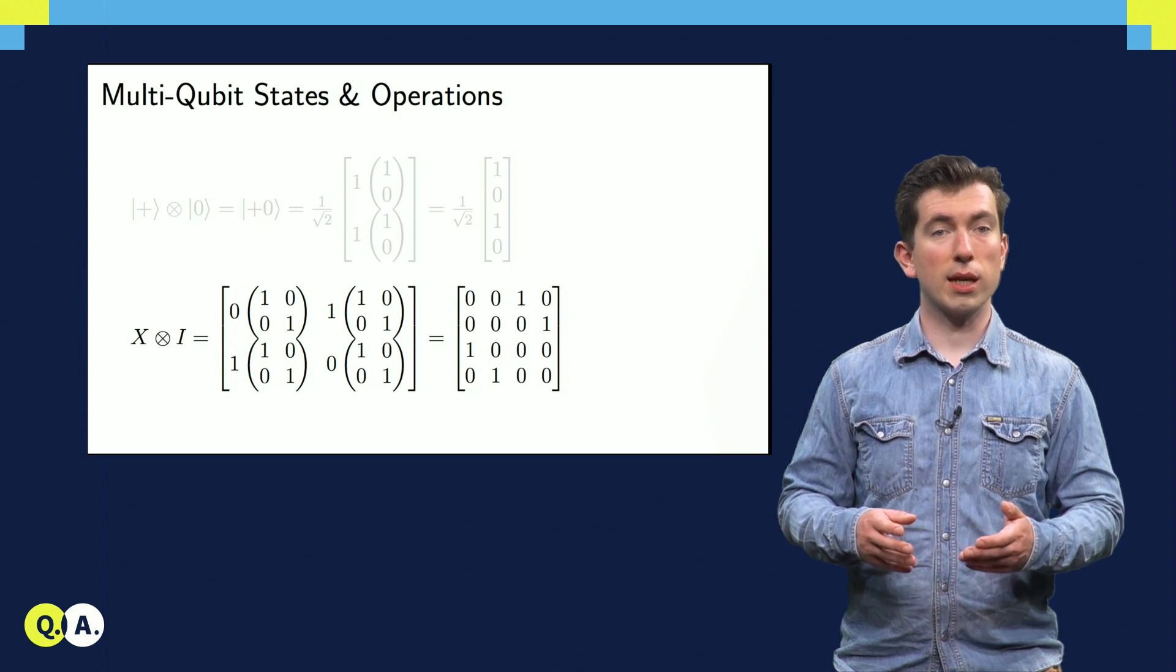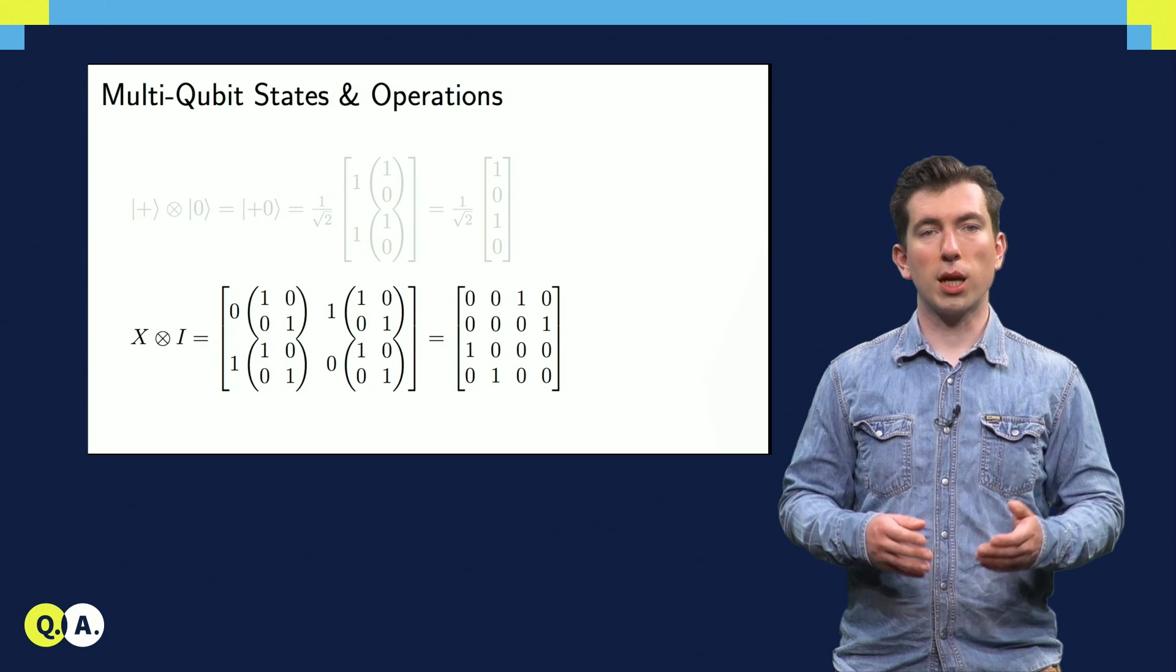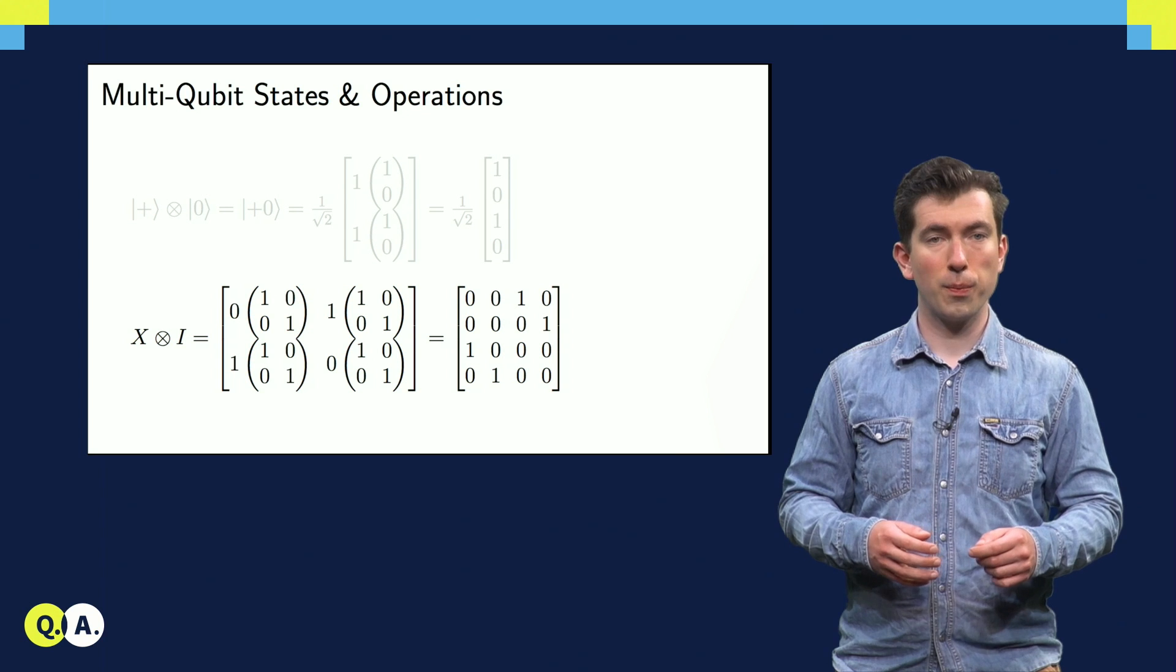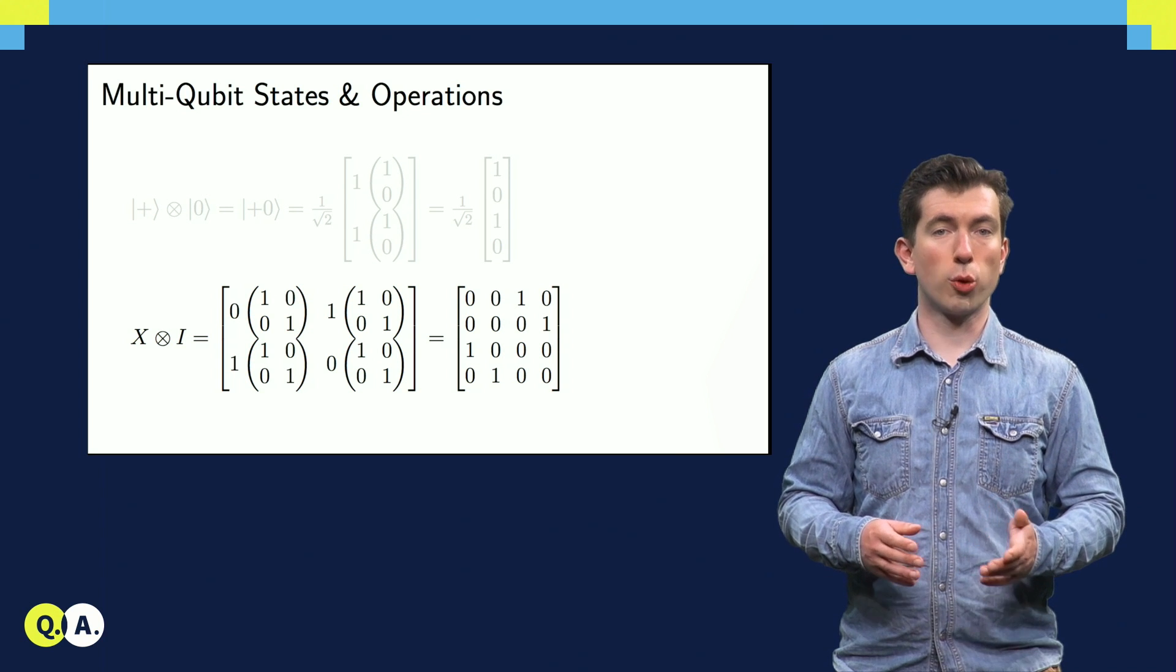We can also take tensor products of operations and observables. Here, we take the tensor product of X and the identity, making a block matrix whose blocks are all equal to the identity multiplied by one of the elements of X.